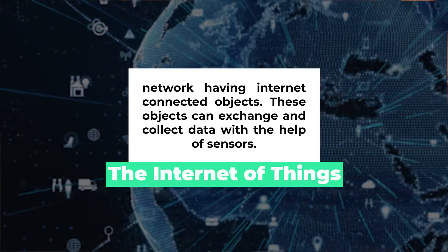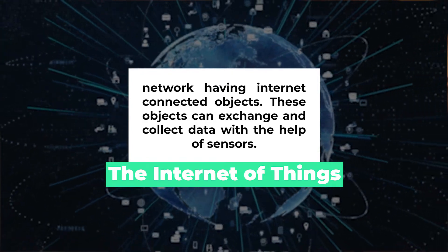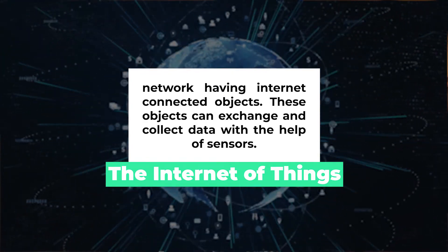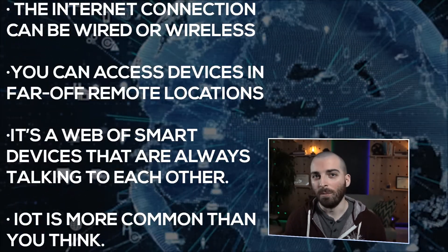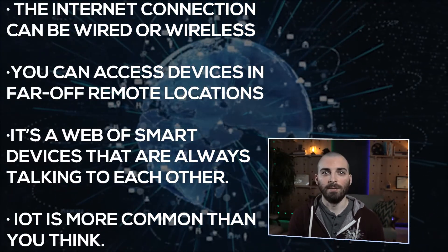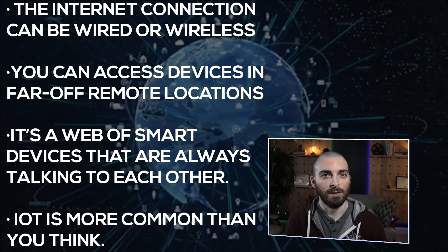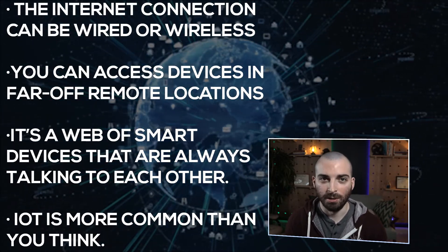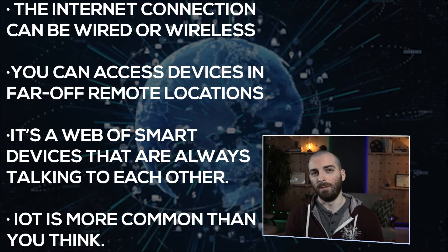So let me quickly define it for you. The Internet of Things is a network of internet-connected objects. These objects can exchange and collect data with the help of sensors. But these aren't smart devices that can talk on their own, so they must be programmed to speak with one another through a dedicated network. The internet connection can be wired or wireless, and you can access devices in far-off remote locations. It's a web of smart devices that are always talking to each other.